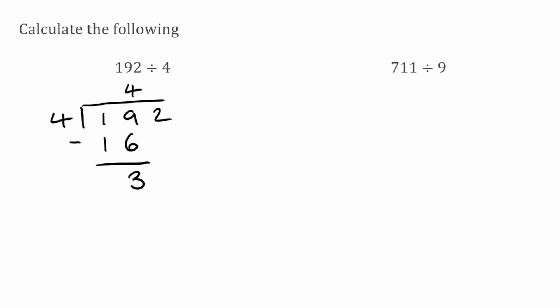Now that I've done that, I'm going to bring down my next digit. So bringing down the 2, I now want to see how many 4s will fit into 32. Well, 4s into 32 will go 8 times because 8 times 4 is 32. So when I subtract them, I get 0, leaving me with no remainder. So the answer here would be 48.